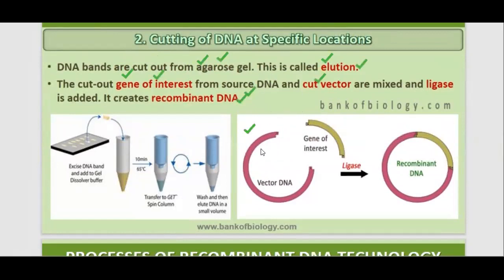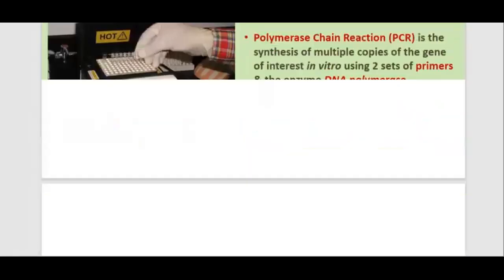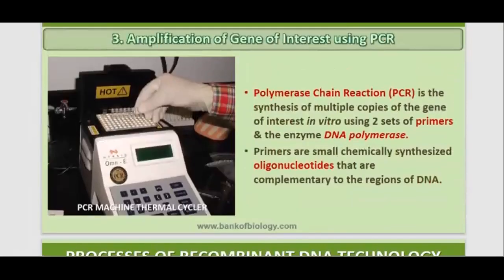As you can see in the diagram, we have the vector DNA and the gene of interest. We use the ligase enzyme to ligate the gene of interest with the vector DNA, producing a recombinant gene. The recombinant gene means the gene of our interest combined with the vector.